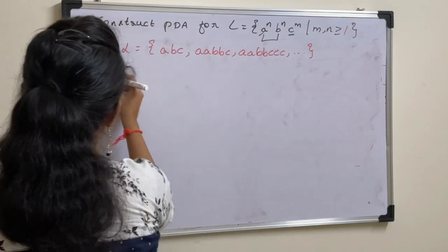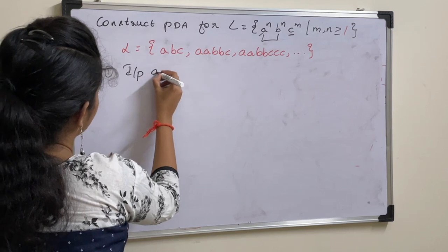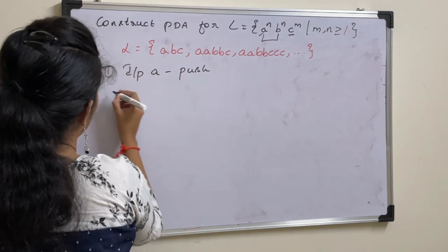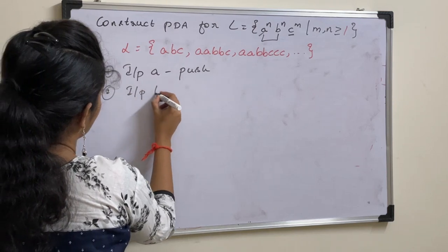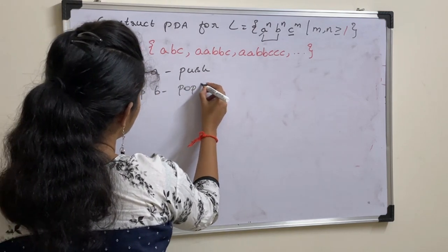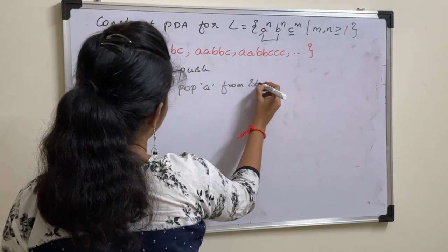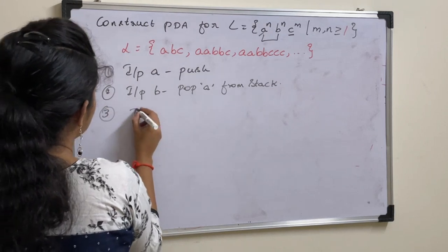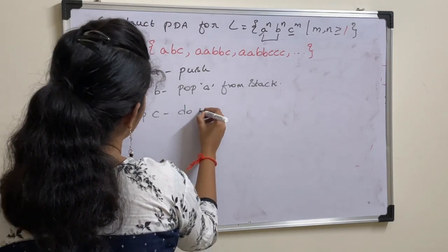That's the logic. Step 1: if the input symbol is A, then perform a push operation. Step 2: if the input is B, then pop A from the stack. If the input is C, do nothing.